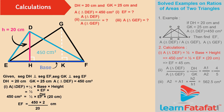On rearranging the equation, we get EF is equal to 450 into 2 divided by 20 cm. That is, EF is equal to 45 cm.